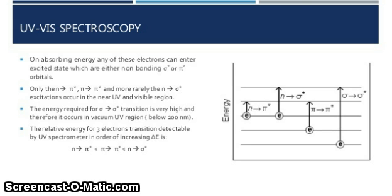The energy required for sigma to sigma star (σ→σ*) transitions is very high, and therefore it occurs in the vacuum UV region below 200 nanometers. The relative energy for electronic transitions detectable by UV spectrometer, in order of increasing ΔE, is shown in this picture.